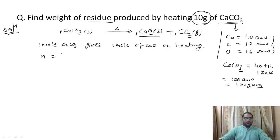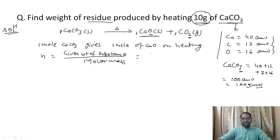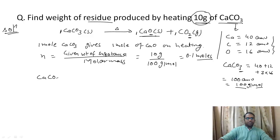To find the number of moles, we use the formula: moles equals given weight divided by molar mass. We have 10 grams of calcium carbonate and the molar mass of calcium carbonate is 100 g/mol, so by solving this we get 0.1 moles of calcium carbonate.